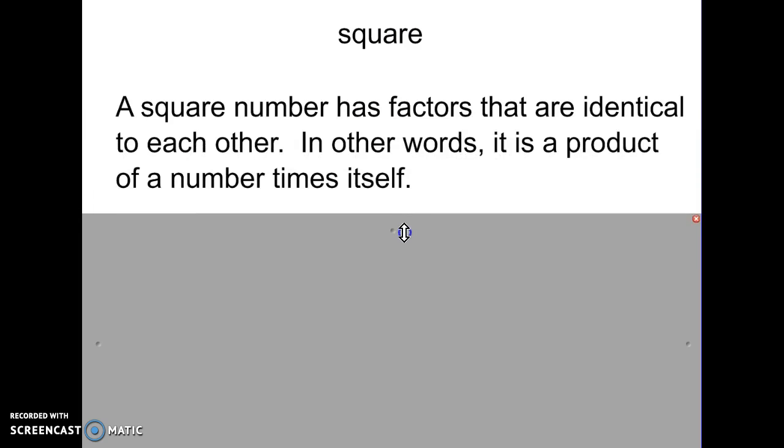And finally, today, we're going to look at square numbers. So, a square number, and this one was a little bit hard for me to come up with with the definition of wording. But, a square number has factors that are identical to each other. In other words, it is a product of a number times itself.